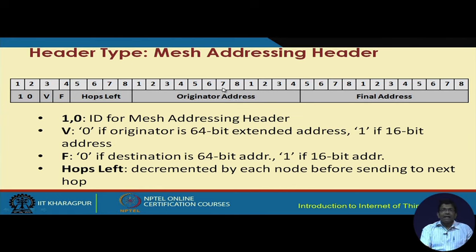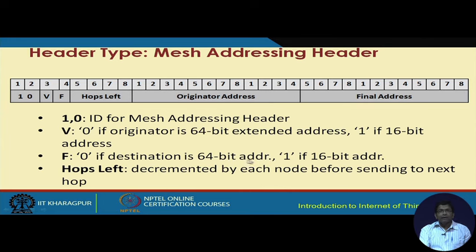The mesh addressing header uses the first two bits to store the ID of the mesh addressing header. The V field is zero if the originator has a 64-bit extended address and one if it is a 16-bit address. The F field is zero if the destination is a 64-bit address and one if it is a 16-bit address. The hops-left field is decremented by each node before sending to the next hop, tracking how many hops remain until the final destination.